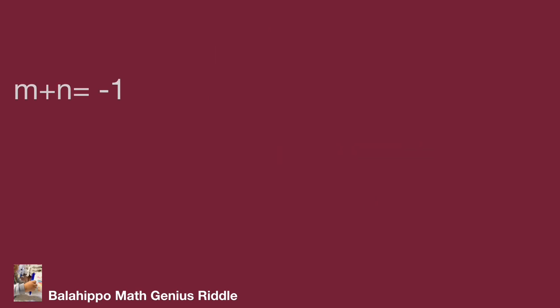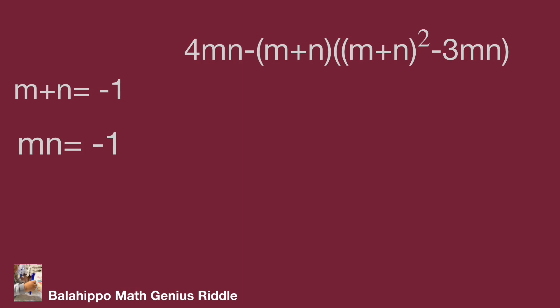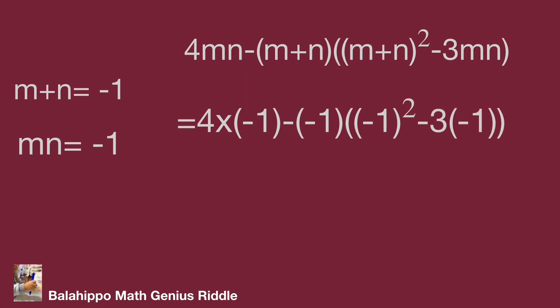Now we have m plus n equal to minus 1 and mn equal to minus 1. The expression is 4mn minus (m plus n) multiplied by ((m plus n) squared minus 3mn). Substituting m plus n by minus 1 and mn by minus 1, we get the value as minus 4 plus 1 plus 3 equal to 0. That's the answer. Did you figure it out? Hope you enjoyed the video. Thank you.